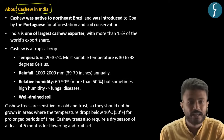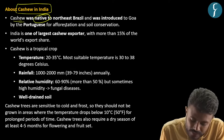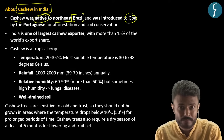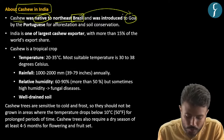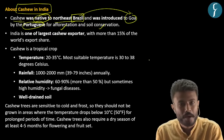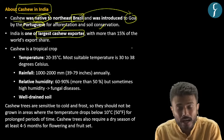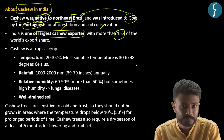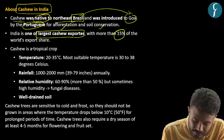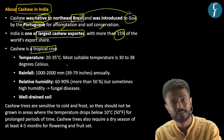Cashew was native to Northeast Brazil and was introduced to Goa by the Portuguese. Their objective was afforestation and soil conservation. Despite not being a native crop, India is one of the largest cashew exporters, accounting for almost 15% of the world's export share. It is a tropical crop — that is why it was successfully introduced in Goa, which has a tropical humid climate.